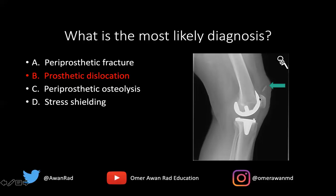Also, the space between the patella and the femoral component of the arthroplasty is not optimal. The patella is actually abutting the metal, which is a clue that something is wrong here. So this is a nice case of a prosthetic dislocation.